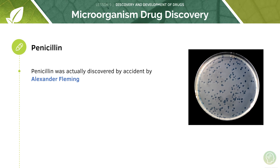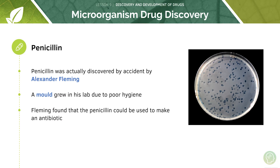I'm sure you've all heard of the story of penicillin, which was actually discovered by accident by Alexander Fleming. Fleming went on holiday and was notoriously known for not being the most hygienic scientist. He left a few Petri dishes containing colonies of Staphylococcus — a bacteria that causes boils, sore throats and abscesses — on his work surface, and left a window open in his lab.